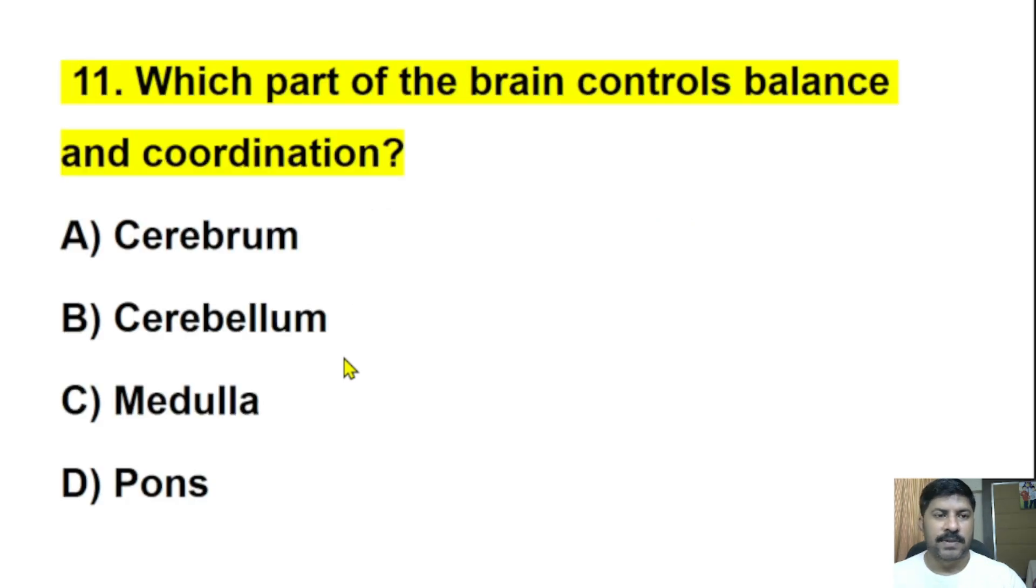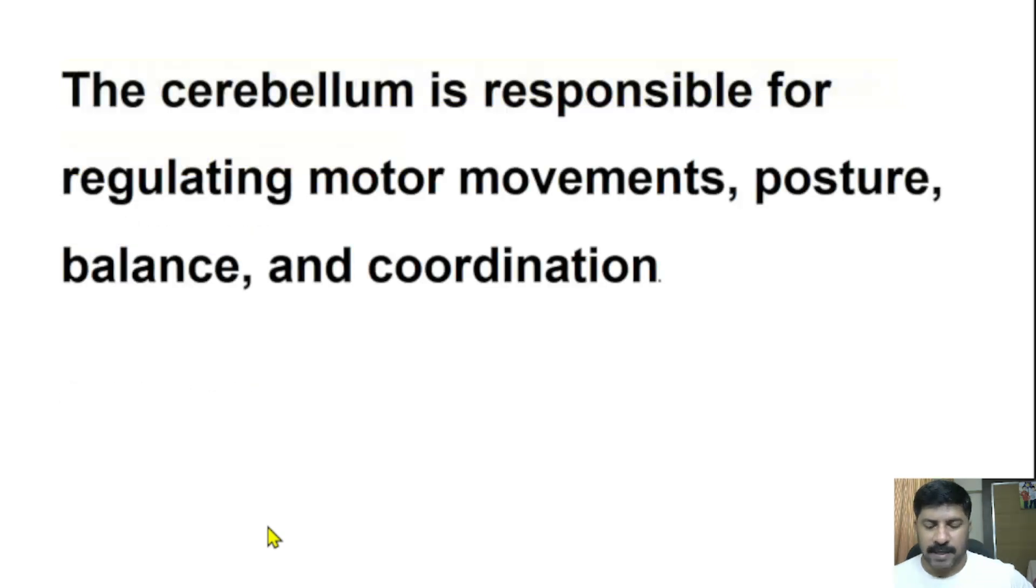Eleventh question: Which part of the brain controls balance and coordination? Cerebrum, cerebellum, medulla, or pons? The correct answer is cerebellum. The cerebellum is responsible for regulating motor movements, posture, balance, and coordination. So cerebellum is not only responsible for balance, it regulates motor movements, posture, balance, and coordination.